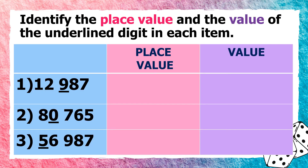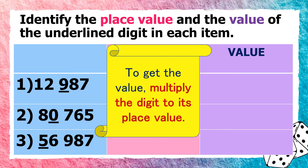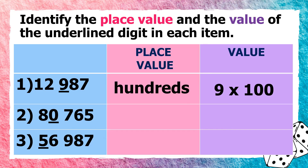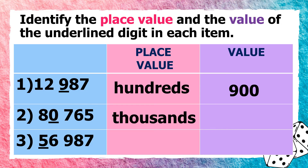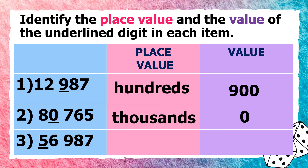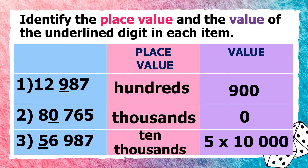Let us have more practice. Identify the place value and the value of the underlined digit in each item. Item 1: 12,987 — the underlined digit is 9, its place value is hundreds, and its value is 9 × 100 = 900. Item 2: 80,765 — the underlined digit is 0, its place value is thousands, and its value is 0 × 1,000 = 0. Item 3: 56,987 — the underlined digit is 5, its place value is 10,000s, and its value is 5 × 10,000 = 50,000.